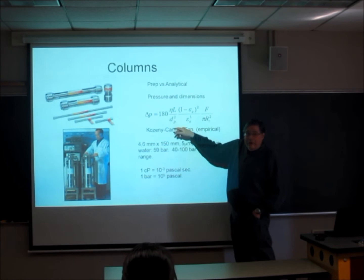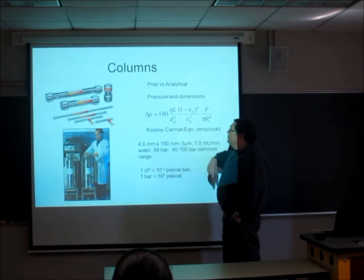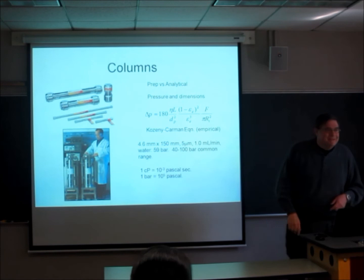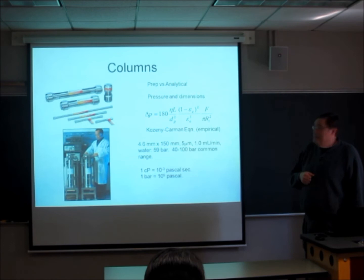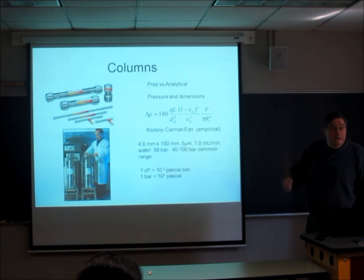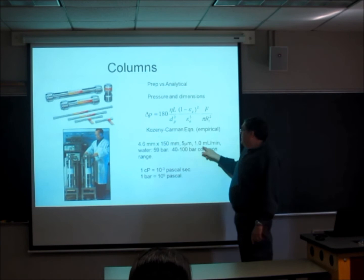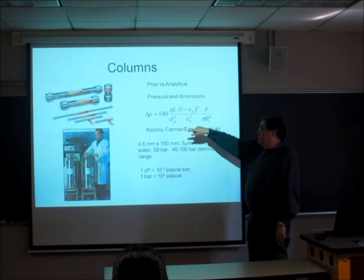Four and a half millimeter inside, 150 millimeter length, five micrometer particles, one mil per minute with water for the viscosity. You'll find a pressure of about 59 bars, 59 essentially atmospheres within a percent of an atmosphere. Commonly, depending on the different solvents, a column like this will show you 40 to 100 bar pressure range. Notice we have length up in the numerator. So if we go from a five centimeter to a 10 centimeter, what's going to happen to the pressure drop? Double. If you go from a five to a 25, you increase the pressure by a factor of five.